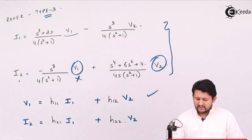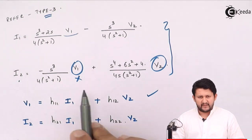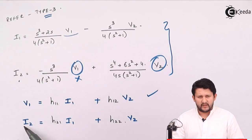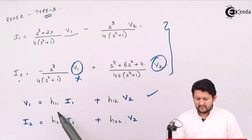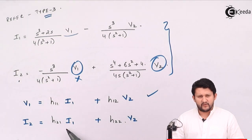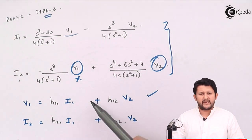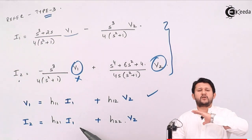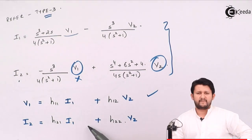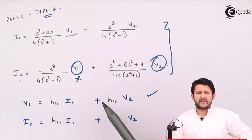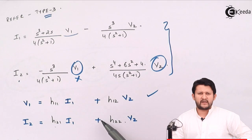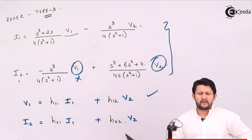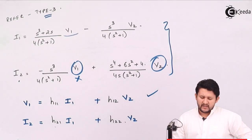For hybrid parameters the equation has input voltage and output current. What is left is I1 and V2. Note: you get minus signs only in ABCD parameters; in all other parameters you will have plus signs. The H parameter matrix is a 2x2 matrix: H11, H12, H21, H22. I need to get the equation for V1.